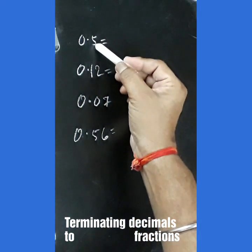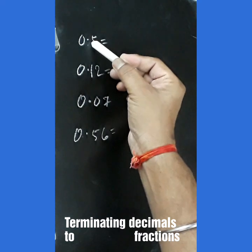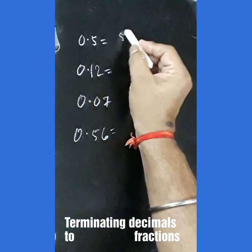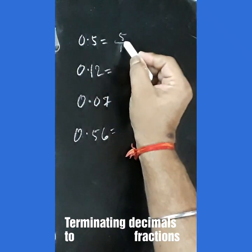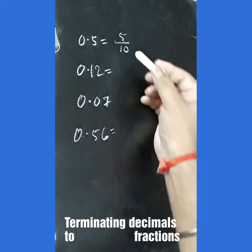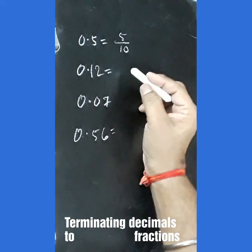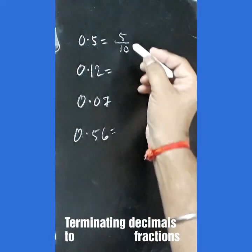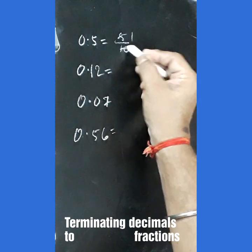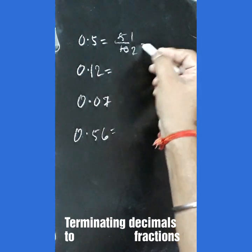For 0.5, we see there is one digit after the decimal. It can be written as 5 upon 10. We can cancel it and write it in lowest terms as 1 over 2.